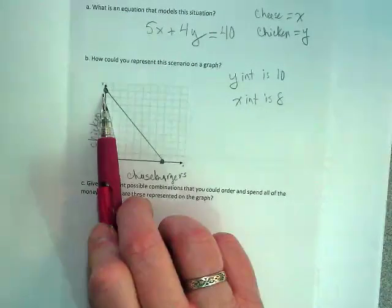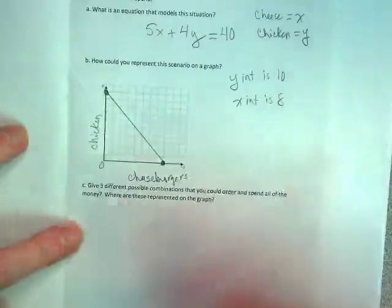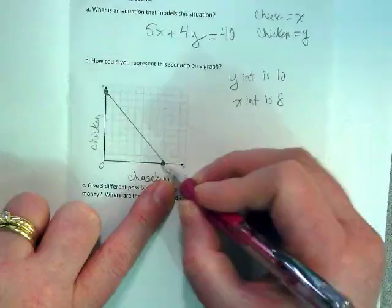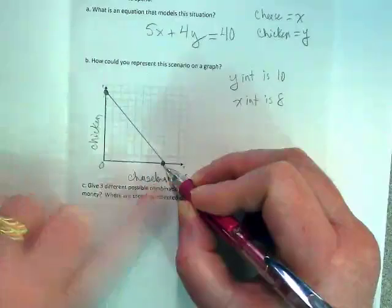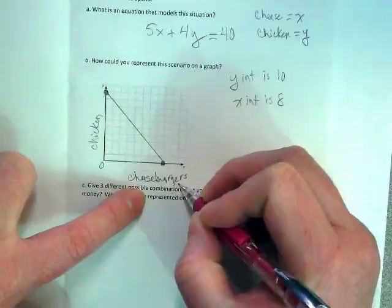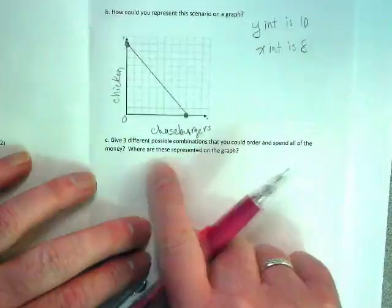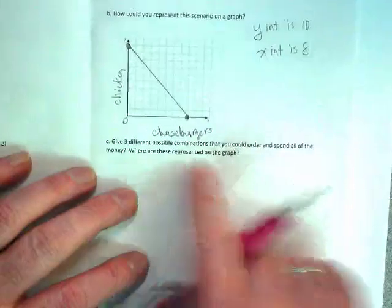Okay, so that's what this is asking here. This is saying if I'm getting this point, I'm getting zero of these but I'm getting all of this and I'm maxing out my money. This is saying give three possible combinations that you could order and spend all of the money. Where are these represented on the graph?